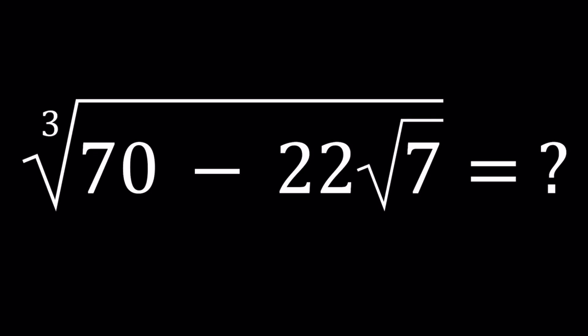Hello everyone. In this video, we're going to be denesting an interesting radical. We have the cube root of 70 minus 22 times the square root of 7, and we're going to denest this radical, meaning we're going to write it as a difference of two radicals.